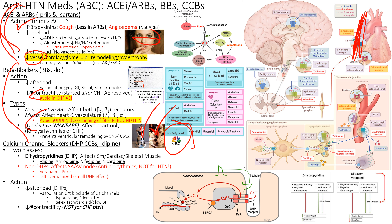Aldosterone is released from the adrenal glands and goes to the kidneys to reabsorb sodium and water in exchange for potassium. If you block aldosterone — the only mechanism to excrete potassium — potassium levels rise, creating a high risk for hyperkalemia. In acute kidney injury, there's already a risk of hyperkalemia, so avoid ACE inhibitors or ARBs then, but restart them once out of the woods to prevent glomerular remodeling.